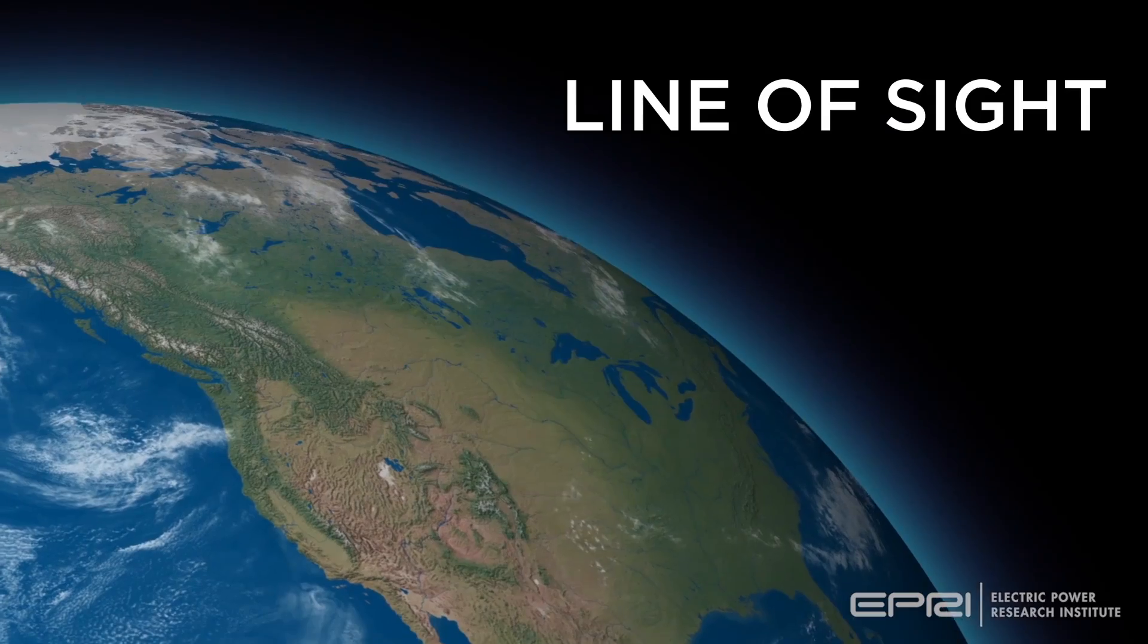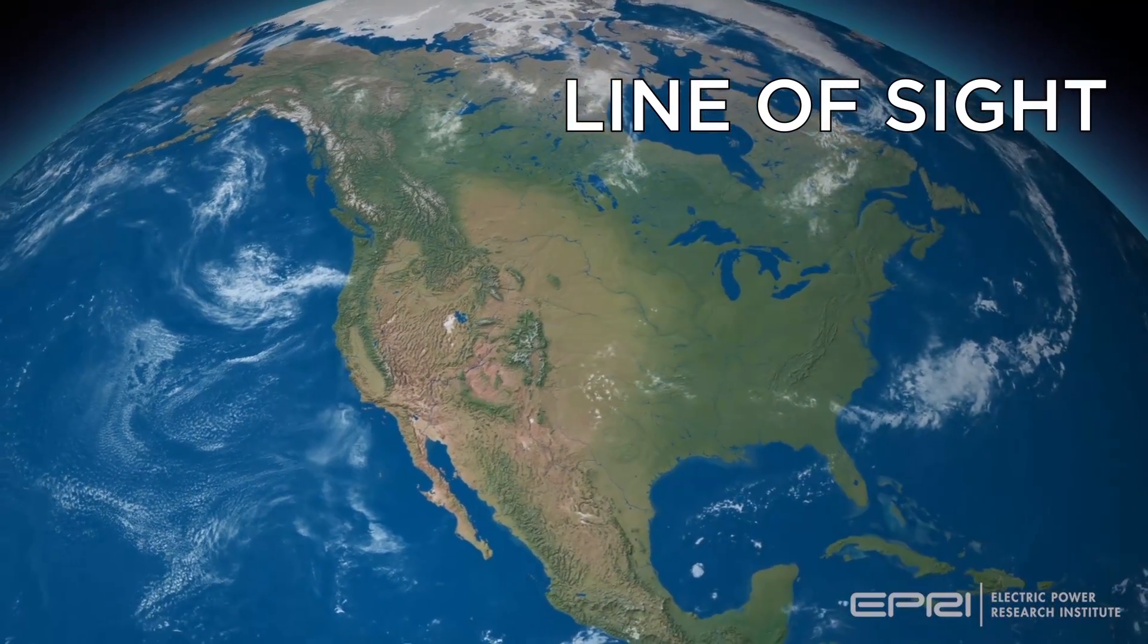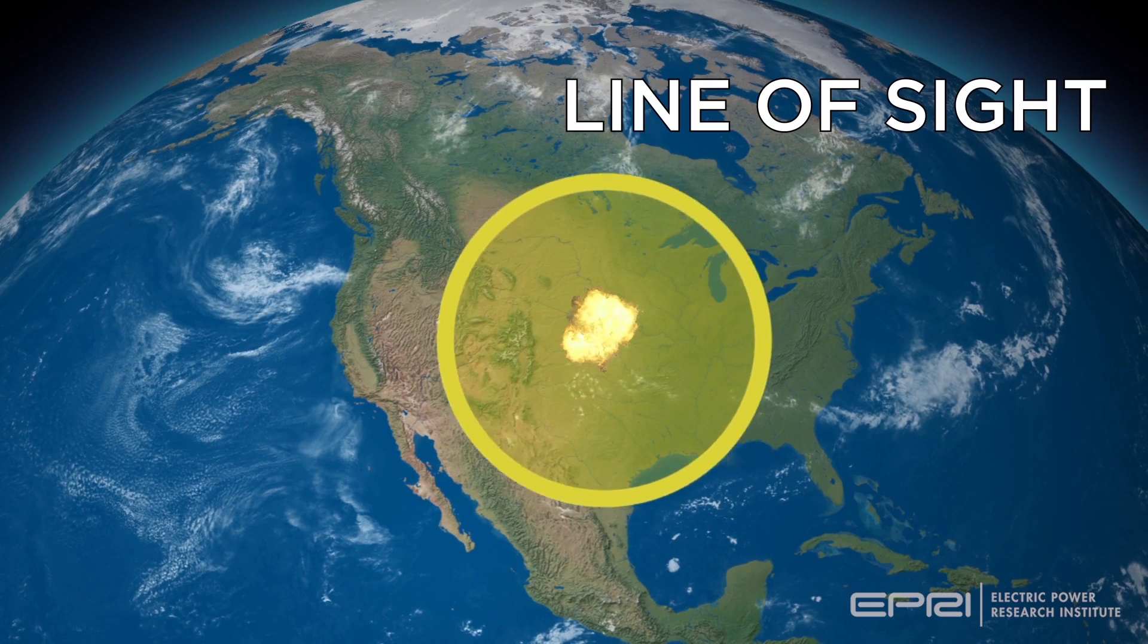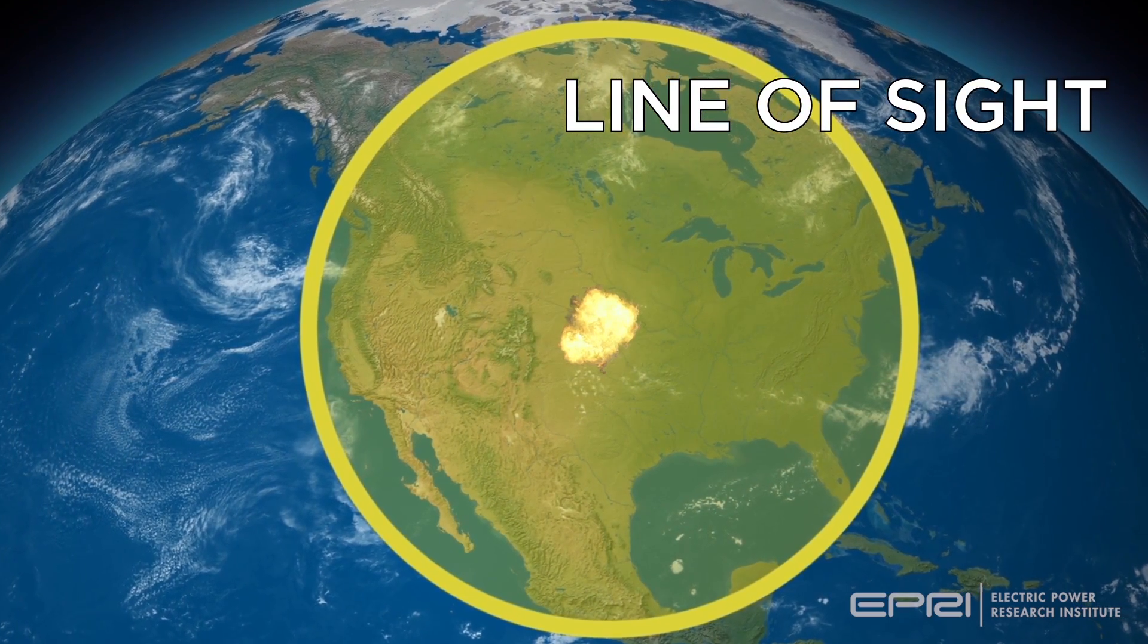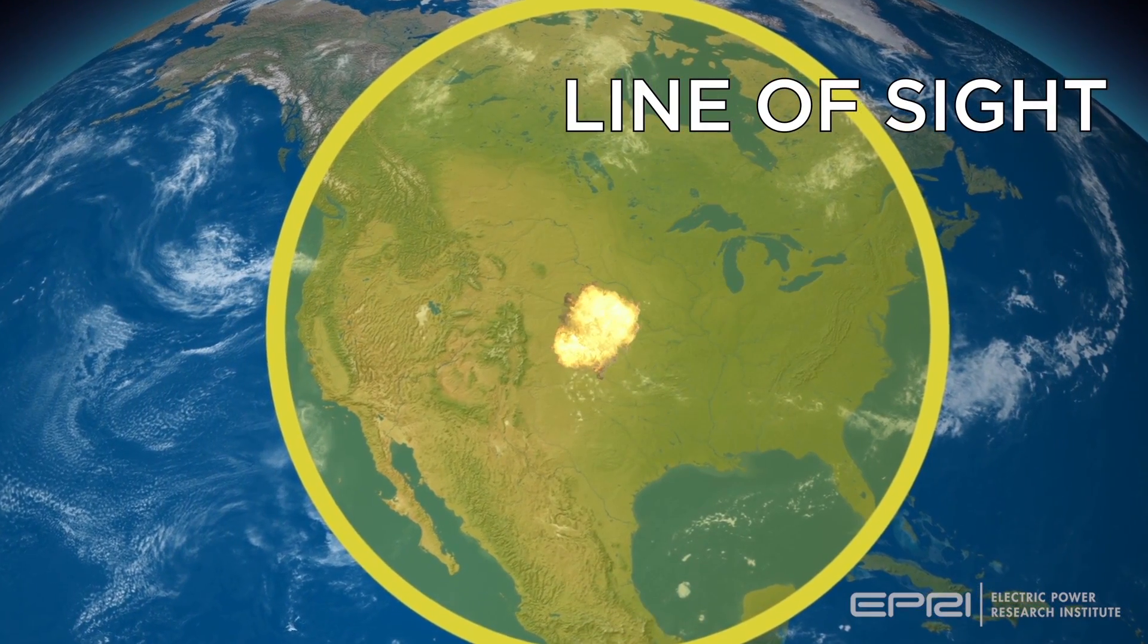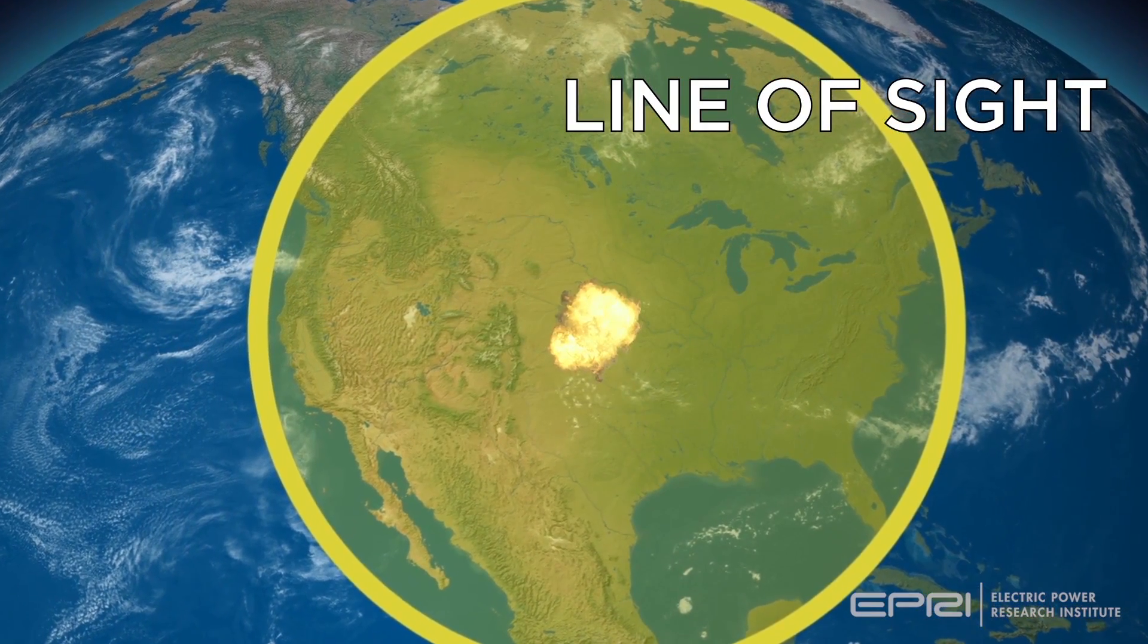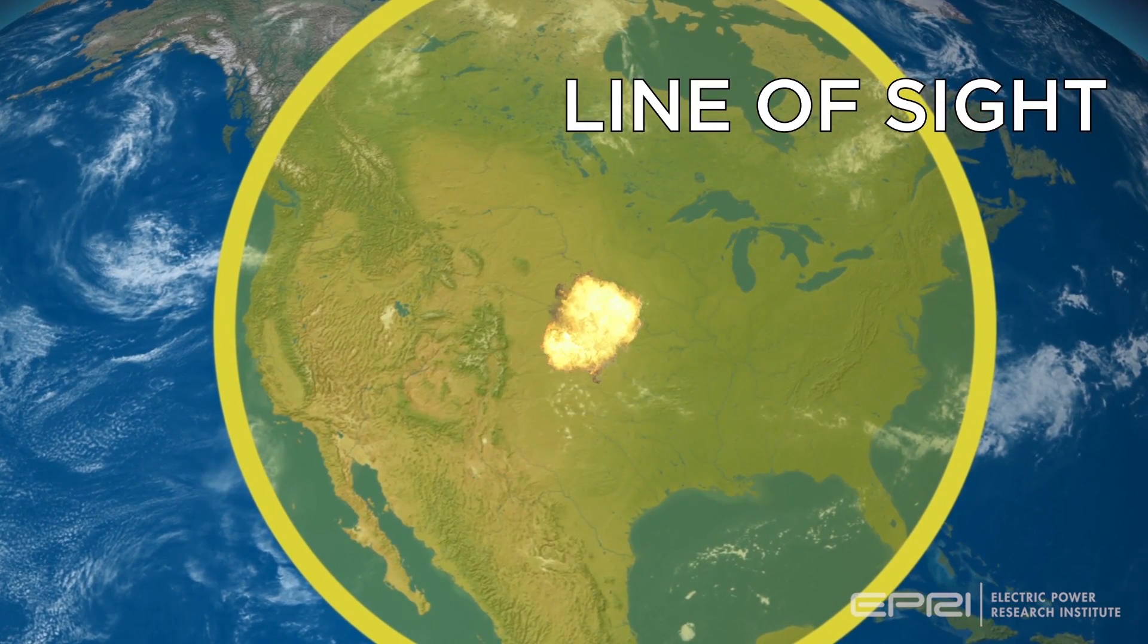A high-altitude nuclear burst can illuminate a very large region, essentially a line of sight from the burst location. The exposed regions for the given burst heights from a nuclear burst over the central U.S. would extend across the continent, beyond the east and west coasts, and outside of our borders to the north and south.